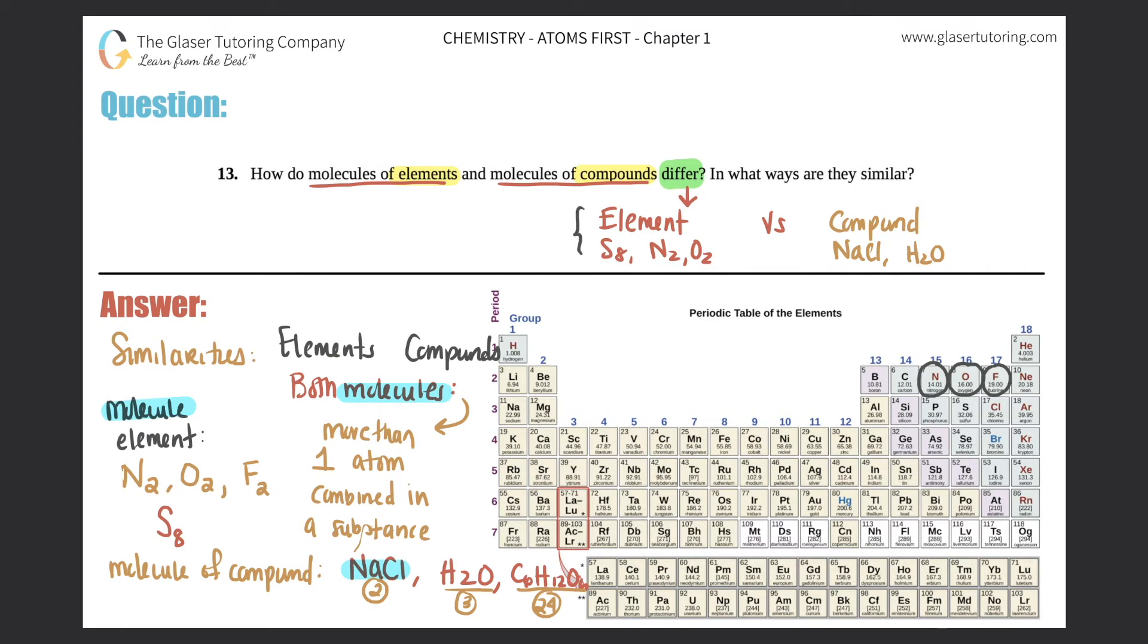So just to recap: your similarities is that for both molecules of elements versus molecules of compounds, they just have to have more than one atom in the substance. The difference, however, is that for your elements you will have the same atom—whether it's eight sulfurs, two nitrogens, or two oxygens. For compounds, they're going to be different—one sodium, one chlorine here, two hydrogens, one oxygen here. That's how they differ.